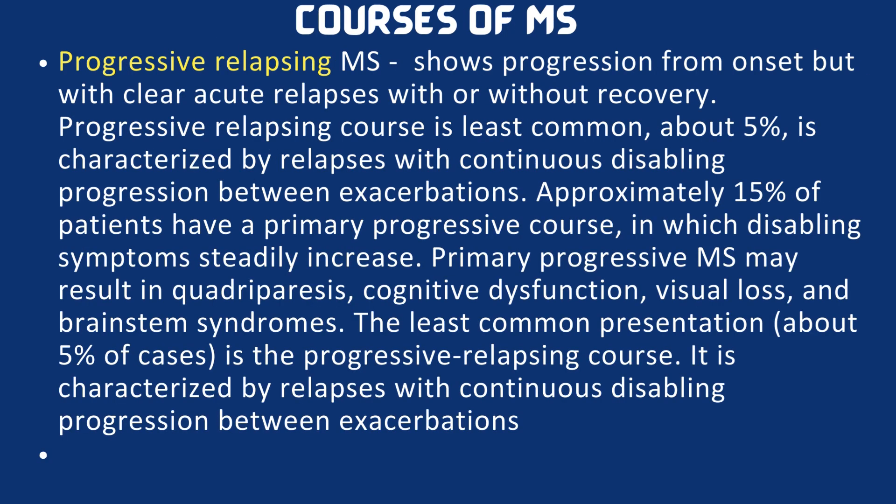Next is the progressive relapsing course. This shows progression from onset but with clear acute relapses with or without recovery. This course is the least common, seen in only about 5% of cases. It is characterized by relapses with continuous disabling progression between exacerbations. Approximately 15% of patients have a primary progressive course in which disabling symptoms steadily increase, resulting in quadriparesis, cognitive dysfunction, visual loss, and brainstem syndromes.